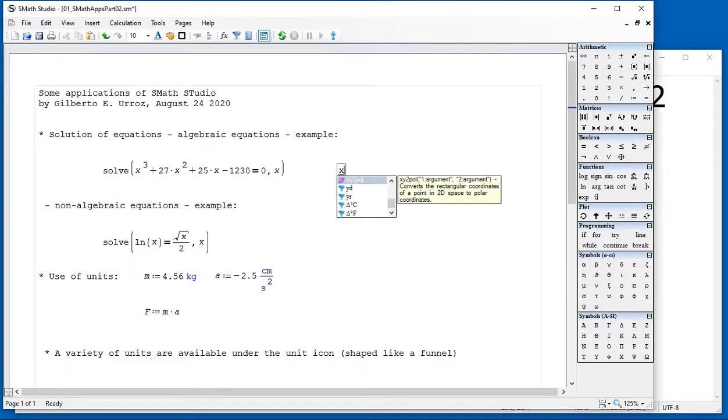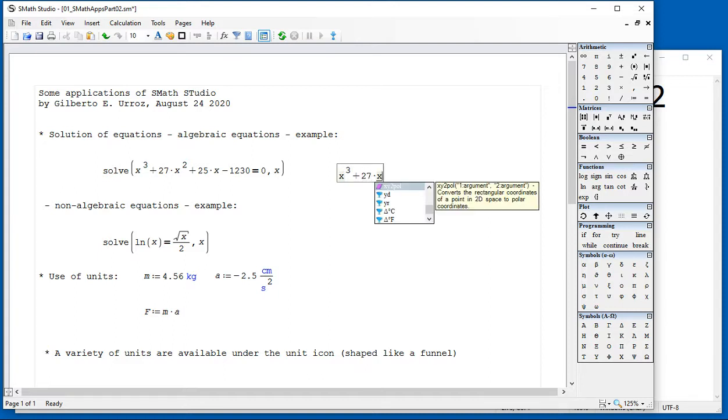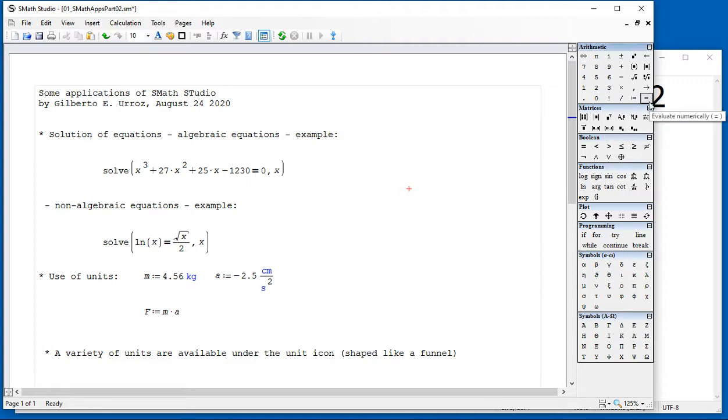To type this equation, you will start by typing x raised to the power 3. You can either use the caret in your keyboard or use the power placeholders over here, and continue plus 27 times x squared and so on. I typed the equation, and then you use an equal sign here to complete an equation. That equal sign is not the regular equal sign, but this one over here, which is called a Boolean equal sign, a logical equal sign, which is obtained by clicking here or using Ctrl-Equal.